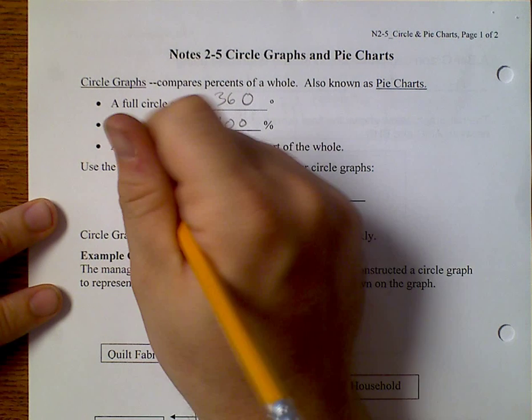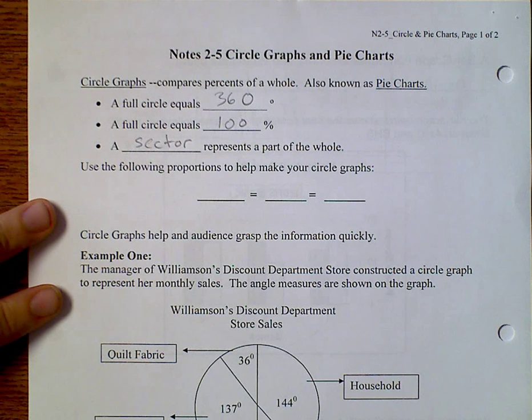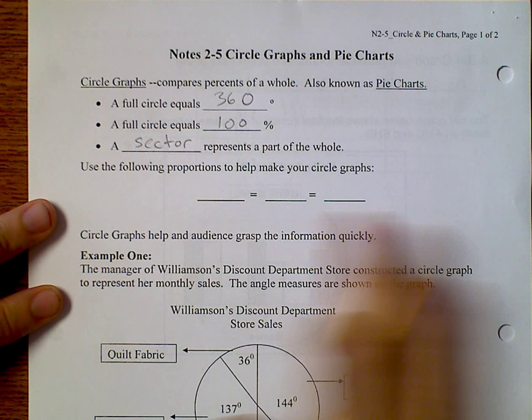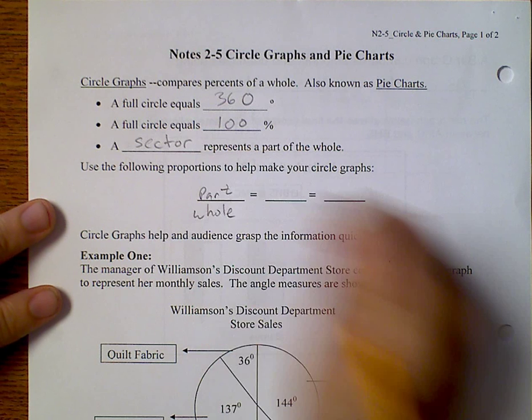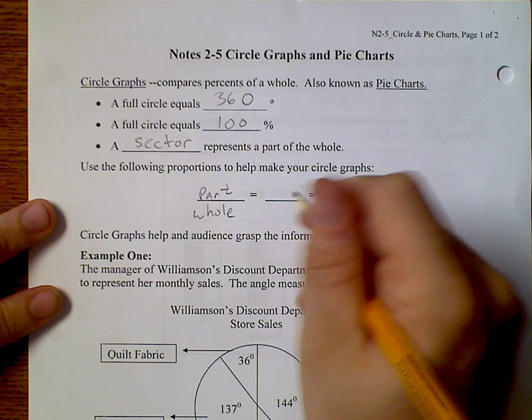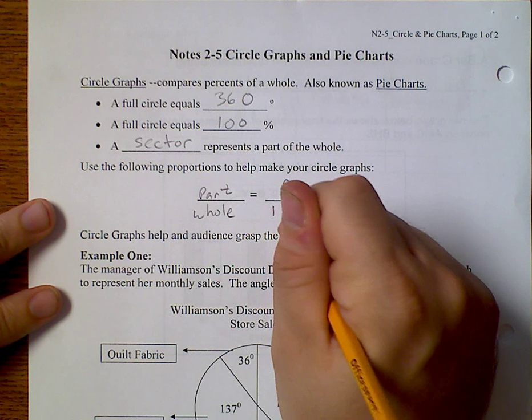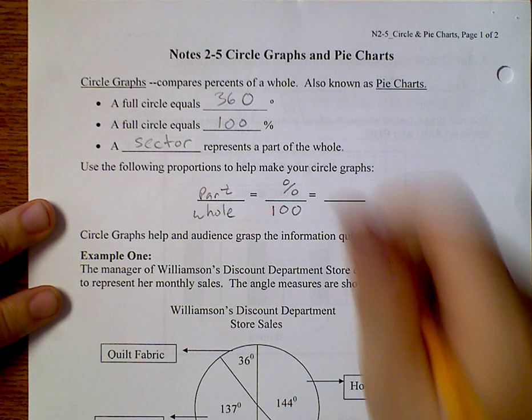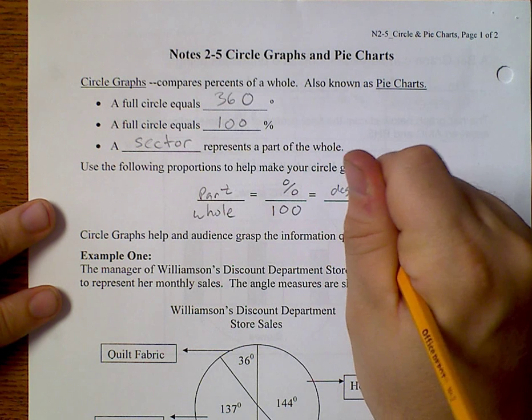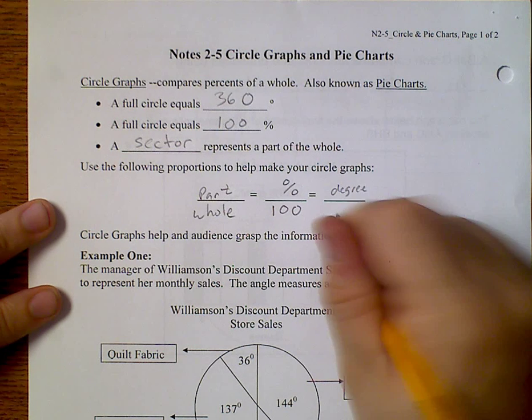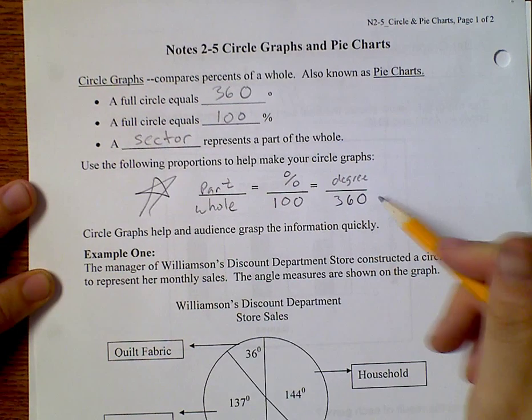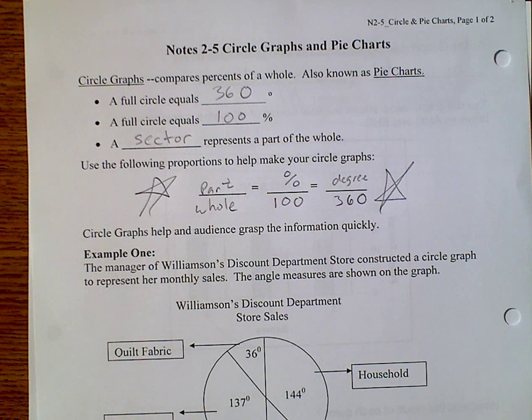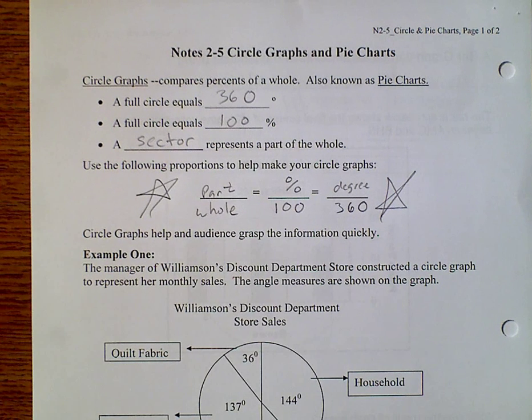And a sector represents the part over whole. And so now we're going to set up some proportions. We know that the part goes over the whole. So the percent goes over 100. And the degree goes over 360. And this is what we're going to use to solve all of our pie chart problems.